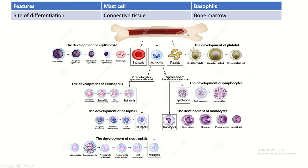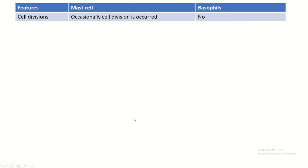This is the development of the basophil. Regarding cell division, mast cells can occasionally divide, but basophils do not divide.